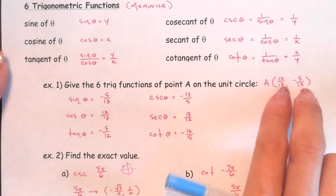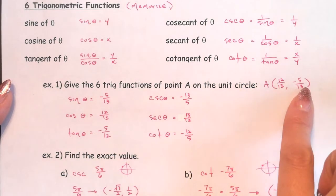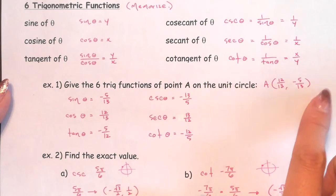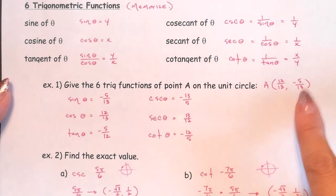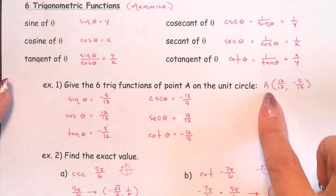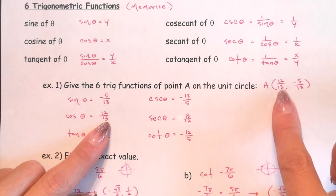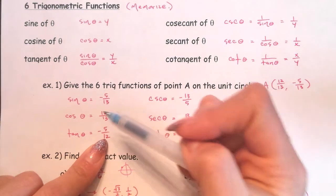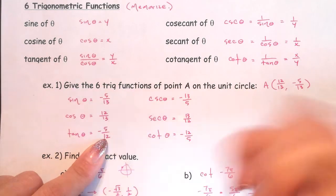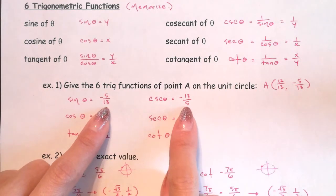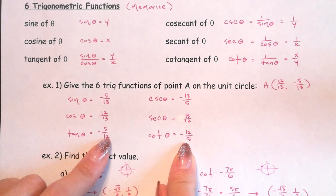It looks a little weird with those fractions, but that's how it works. So what is the sine value? It's y. Cosine? It's x. Tangent? It's y divided by x — the 13ths divide away, giving negative 5 over 12. Cosecant? Flip it. Secant? Flip the cosine. Cotangent? Flip the tangent. That's all you're doing — recognizing the values, then memorizing.